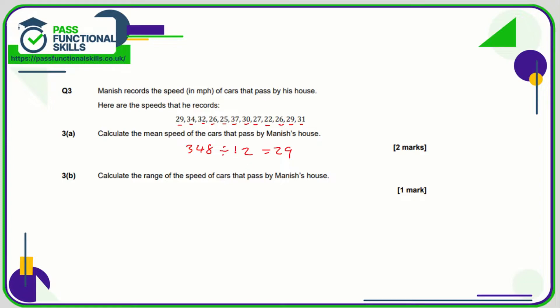The range is simply the difference between the highest value, which is 37, and the lowest value, which is 22. So 37 minus 22 gives a range of 15.